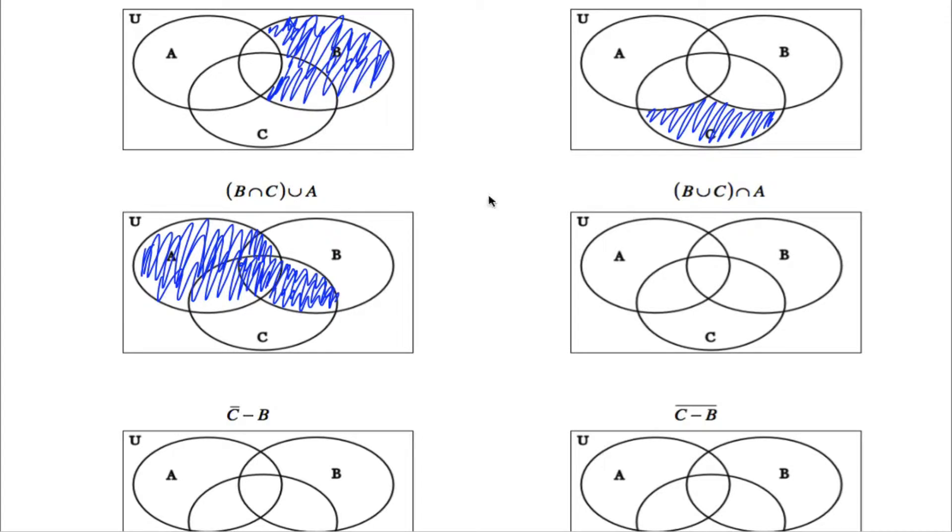Moving on. This one looks very similar, but it's actually quite different. Over here, we're finding the intersection of two sets. So to be in the intersection of two sets, it has to be in both sets.